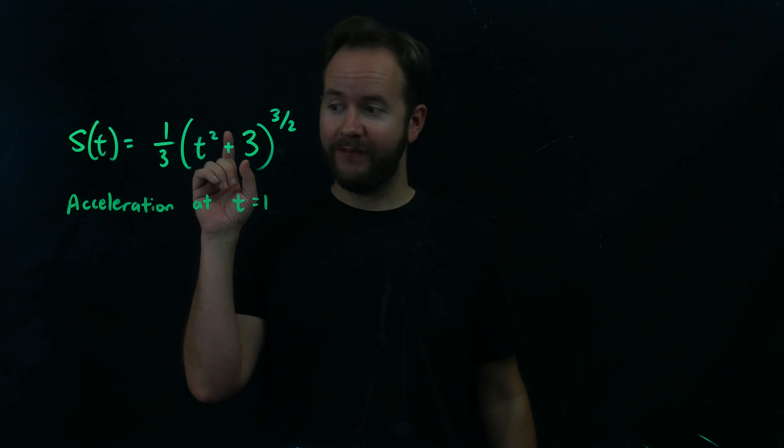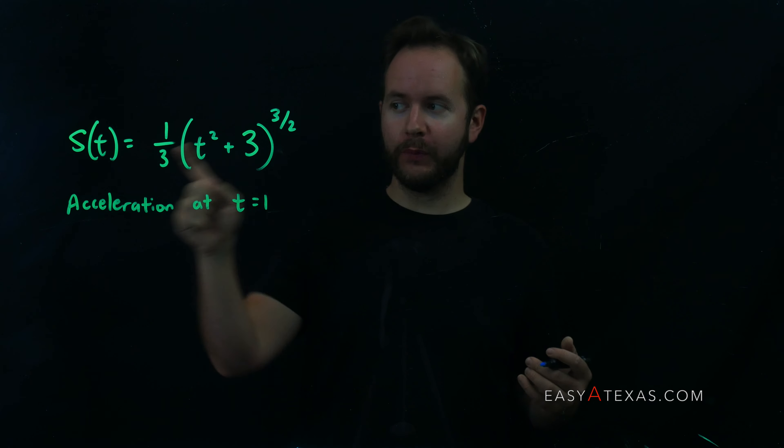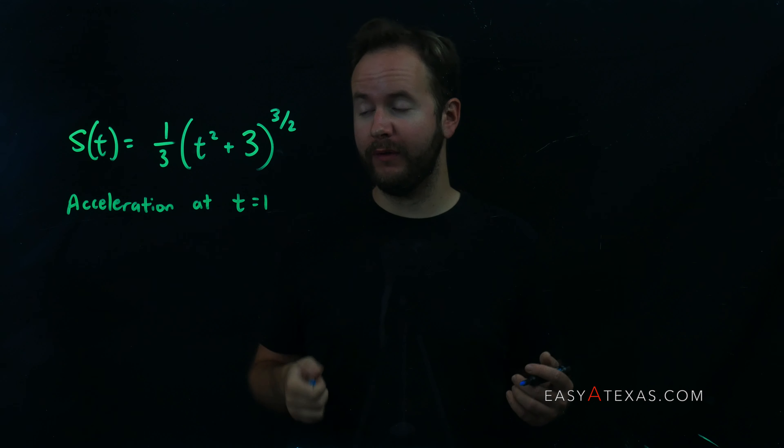Here we're given the position of a car and we're trying to figure out the acceleration at t equals 1. The way we do that is by taking two derivatives. One derivative of position gives me velocity, one more derivative gives me acceleration.